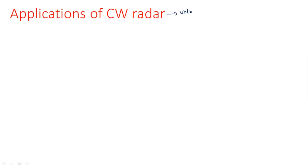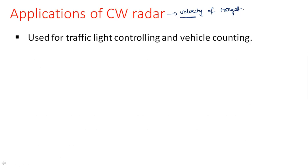Next are the applications of CW radar. The main purpose of CW radar is to find the relative velocity of a moving target. The first application is traffic light controlling and vehicle counting. In cities with heavy traffic, signals are automatically controlled based on the volume of vehicles coming from any direction — this is done automatically using CW radar. It is also used for vehicle counting.